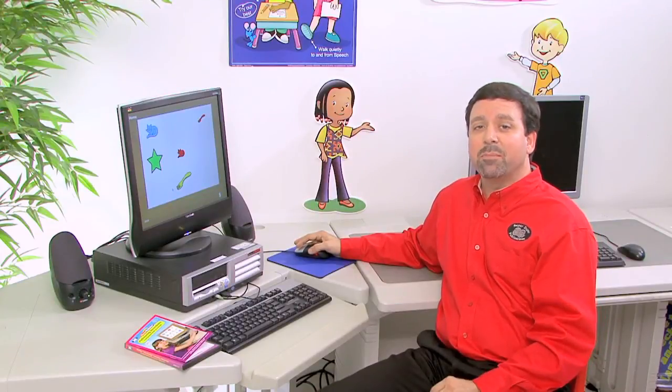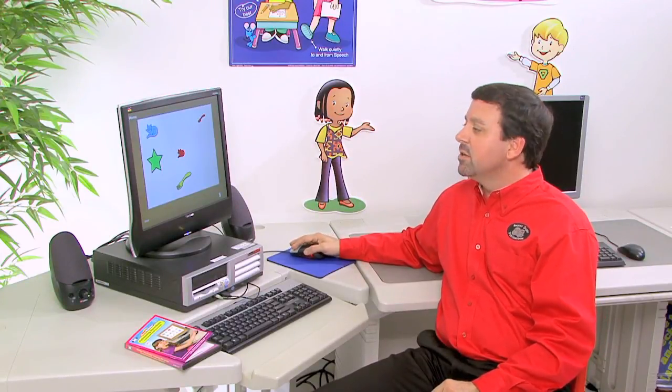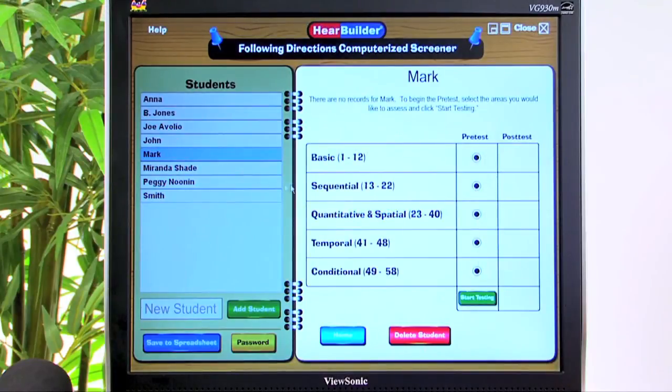So those are a few examples of the basic directions. So let's go back to the home screen, and now let's take a look at some examples from the Sequential Directions subtest.